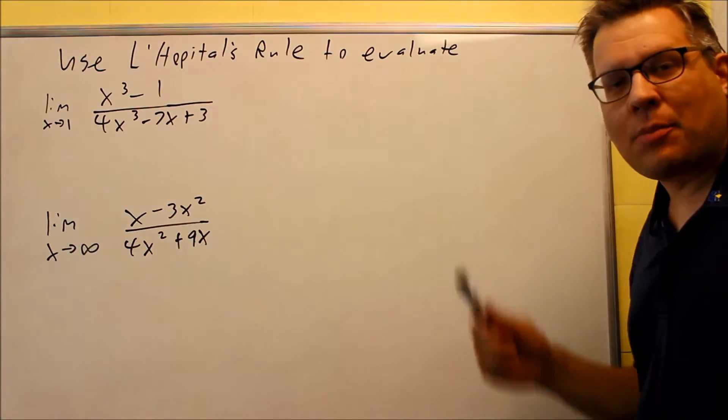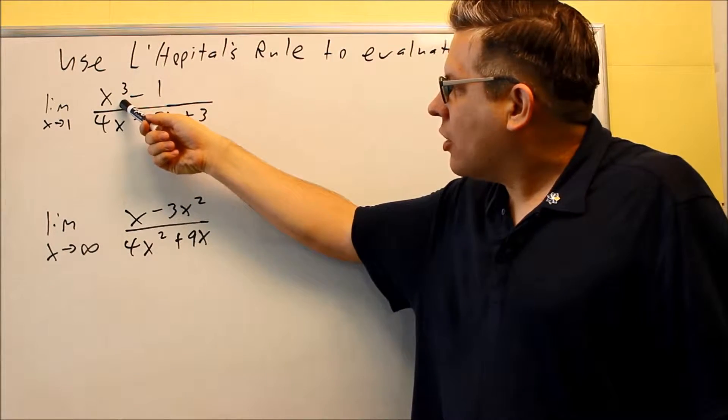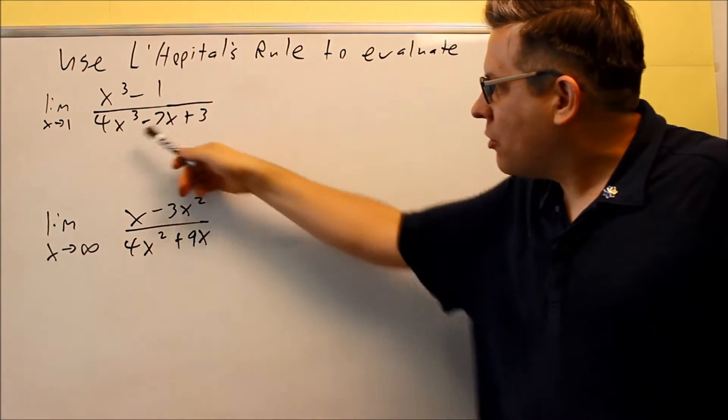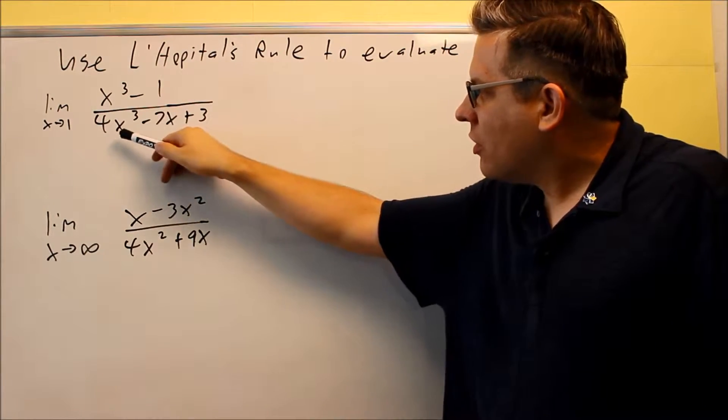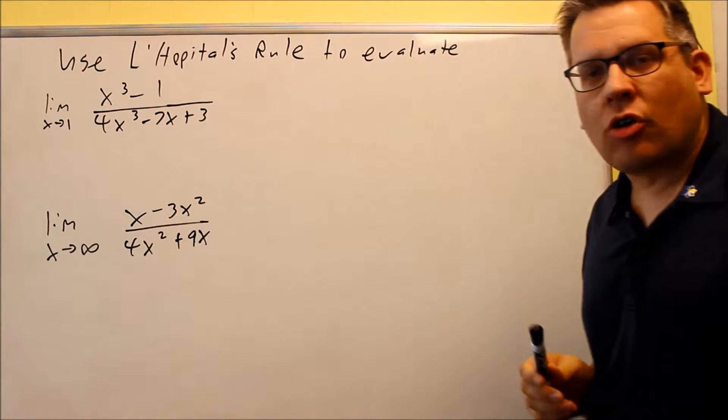You should always check to make sure L'Hôpital's can be applied here. I'm going to put one in the top and I get one minus one, I get zero on top. If I put one in there for the x's, I get four minus seven, negative three plus three. Again I get a zero over zero situation.